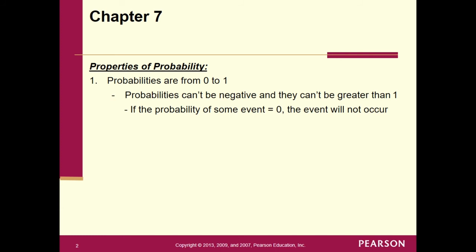If the probability of some event is equal to 0, the event will not occur — that's one extreme, and it's absolute. At the other extreme, if the probability of some event is 1, the event will occur — another absolute. But most events do not have a probability of 0 or 1; they're somewhere in between. Usually we start with 0.5, so we know that half the time that event will occur.